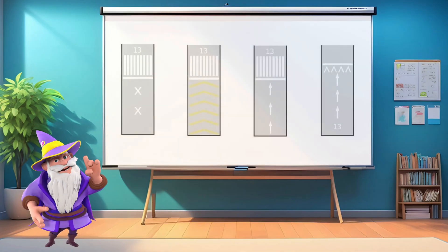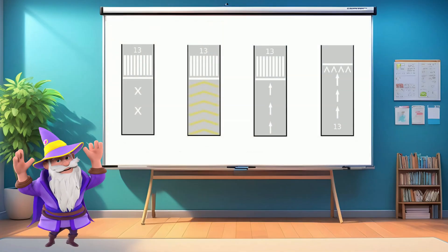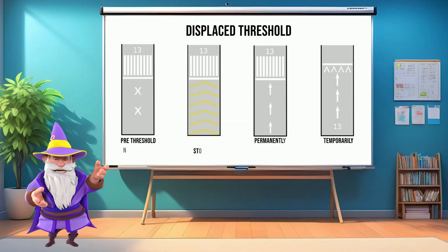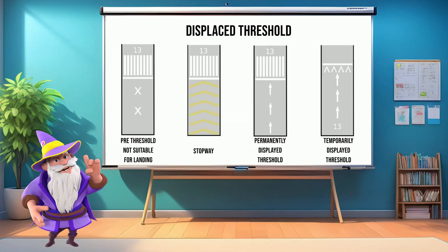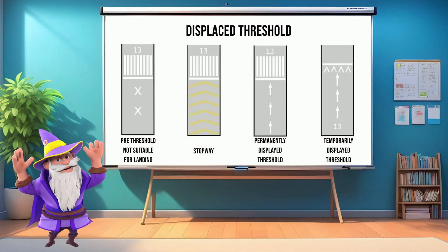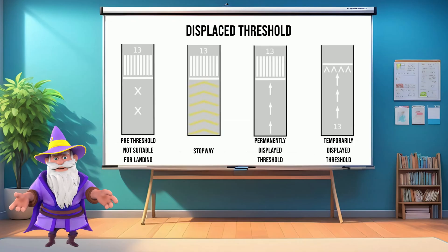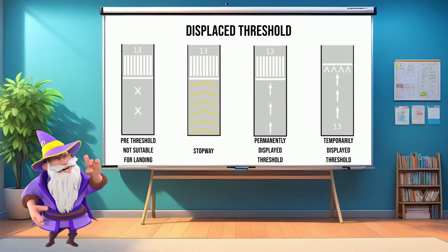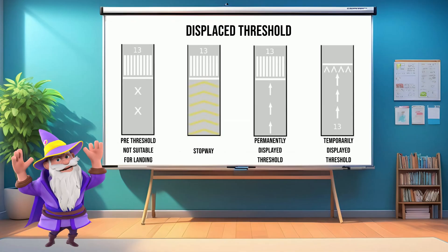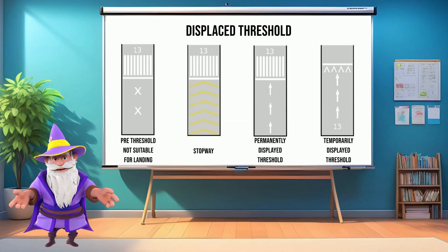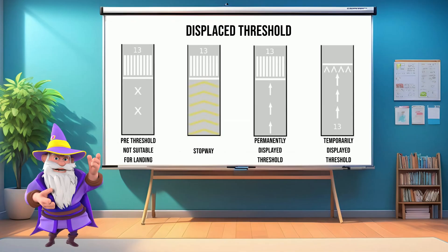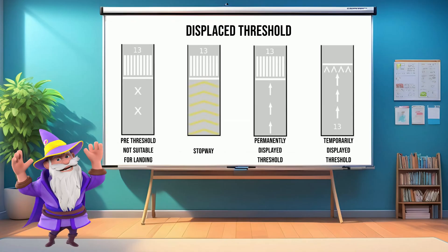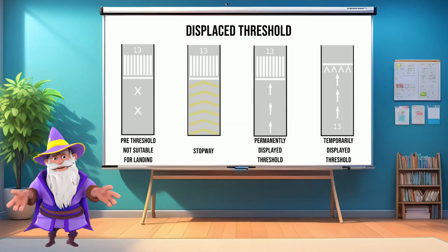What is a displaced threshold? A displaced threshold is a threshold that has been moved further down the runway, reducing the available landing distance. While the physical pavement is still there, aircraft cannot land before the displaced threshold. However, pilots can use the displaced portion for takeoff or rollout after landing.